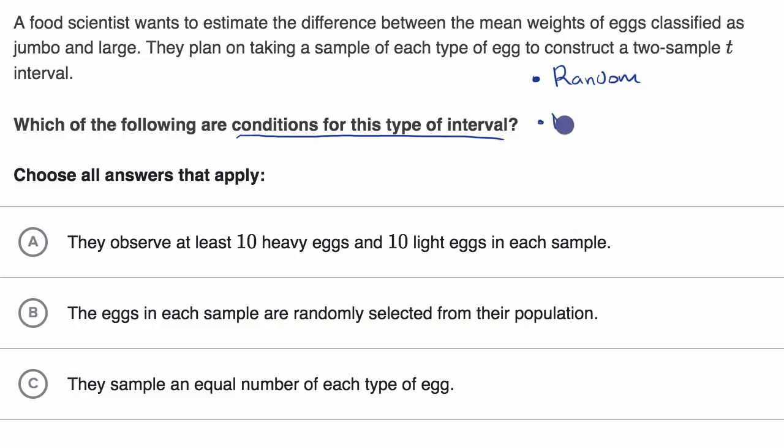The second is the normal condition, which is a little bit different depending on whether we're talking about means or proportions. The random condition is essentially the same. For the normal condition when we're talking about means—remember, they're looking at the difference between mean weights of eggs—there's actually several ways to meet the normal condition. One is if the underlying distribution is normal. The second way is if your sample sizes for each sample are greater than or equal to 30.